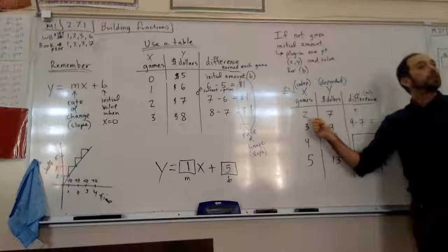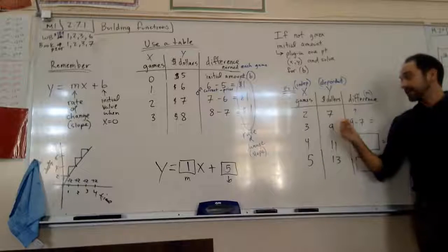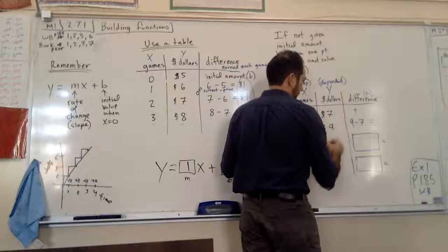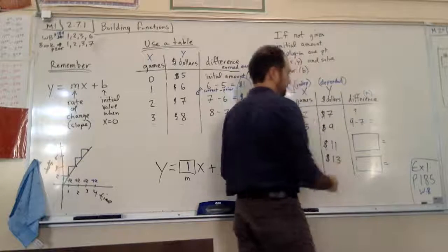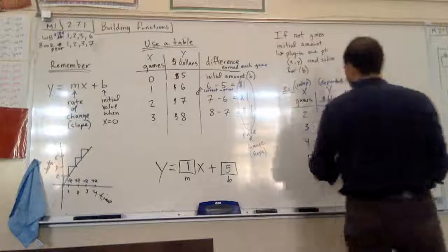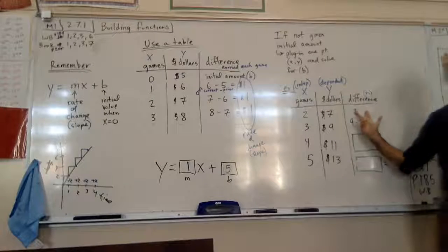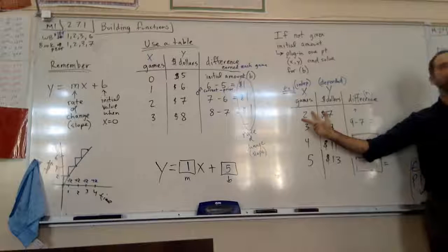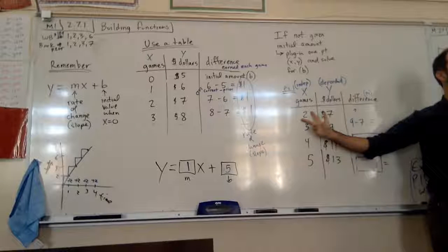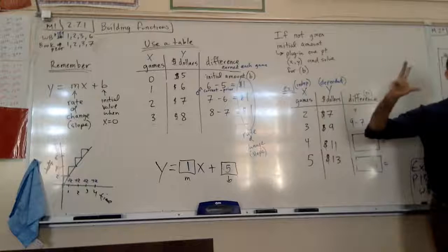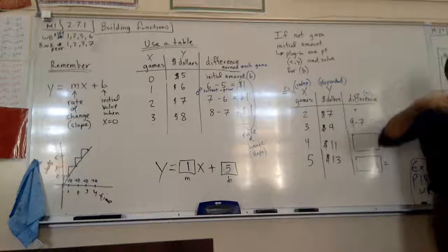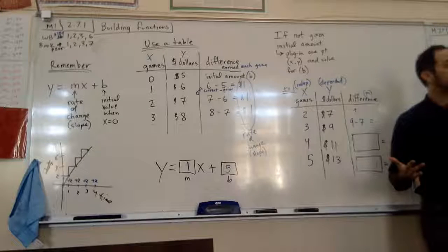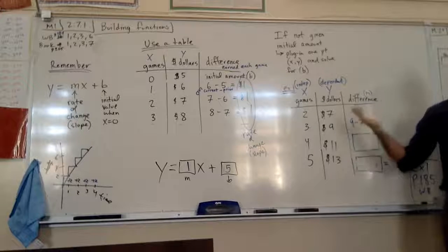You're going to plug in one point so you can solve for your initial value, your B value. Just keep that in your head. If you don't know your B value, we're going to be able to plug in a point to find that B value. Let's look and do this part first. So, after two games, you've got seven dollars in your pocket. Three games, nine. Four games, 11. Five games, 13.